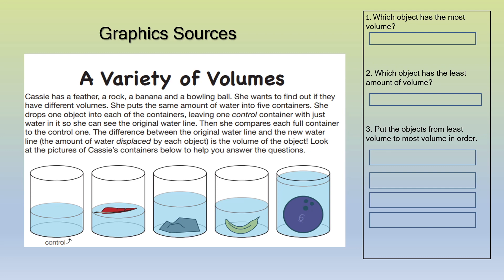This is an experiment conducted by Kiasi on a variety of volumes. Kiasi has a feather, a rock, a banana, and a bowling ball. She wants to find out if they have different volumes. She puts the same amount of water into five containers. She drops one object into each of the containers, leaving one control container with just water in it so she can see the original water line. Then she compares each full container to the control one.